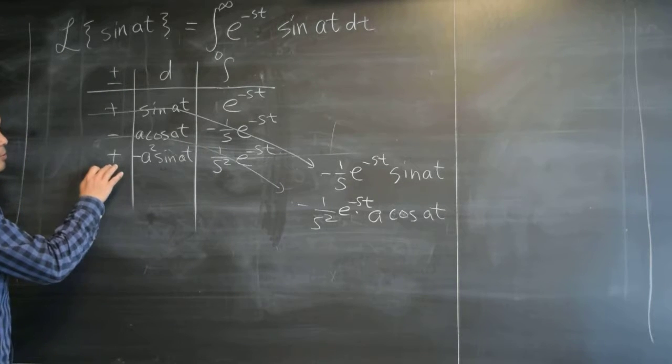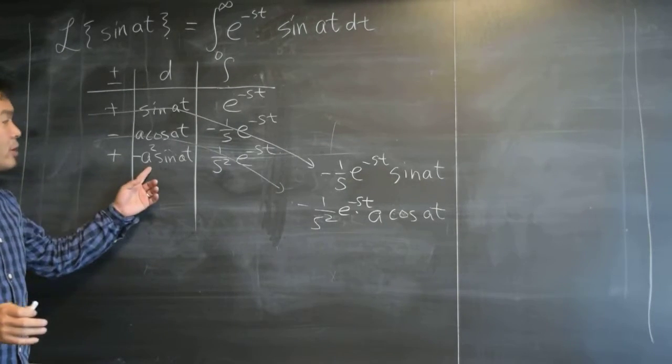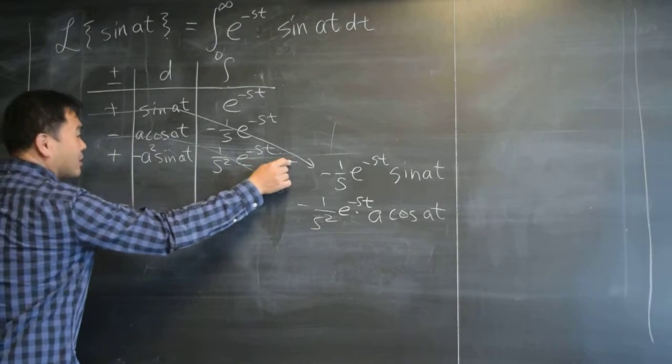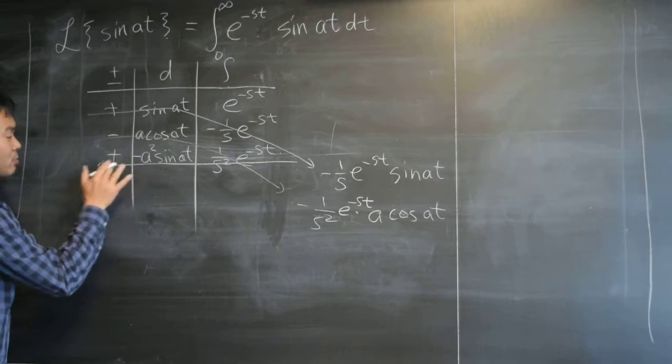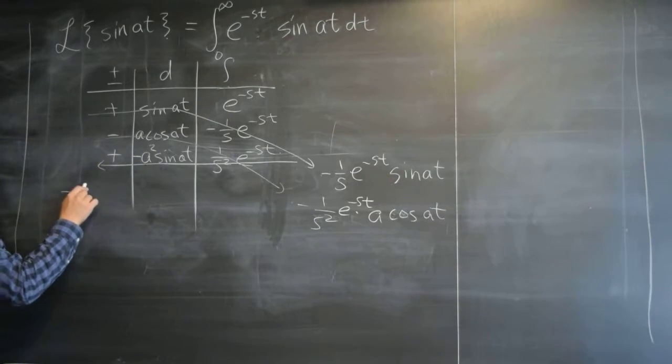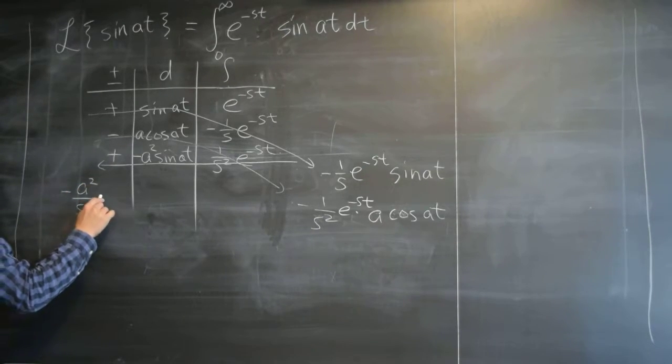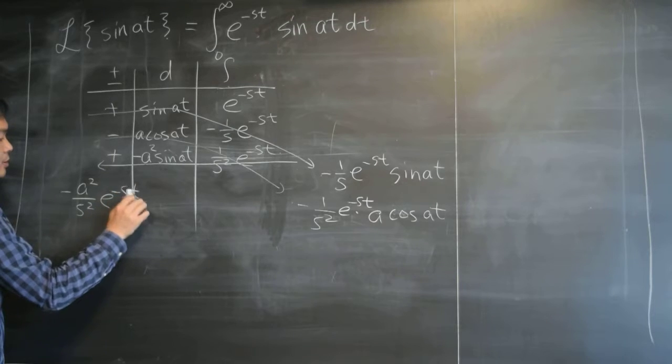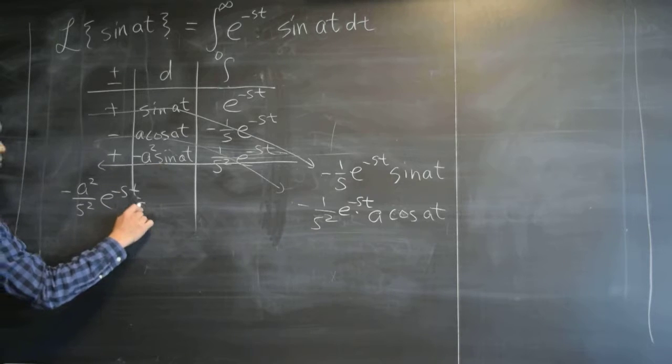And then, so far all the tabular integration that I showed you only had zero at the end. So this last thing that we do didn't do anything, but for this it's really important. If you multiply this you get negative a squared over s squared e to the negative st. So if we're going this way, you get this and then sine at.